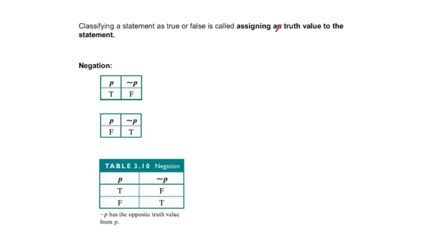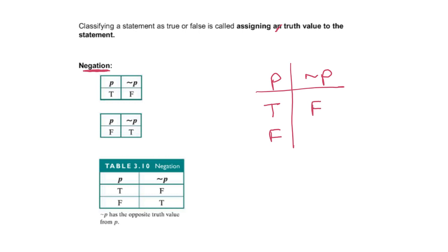When it comes to negation, not p has the opposite truth value of p. So if I have p and assign it a truth value — the first time true, the second time false — if my original statement p is true, then not p is false. If my original statement is false, then not p is true. So not p and p always have opposite truth values.